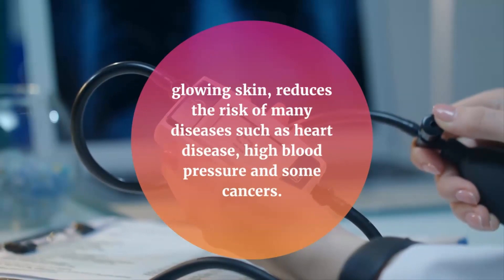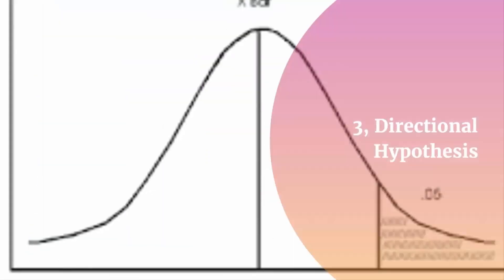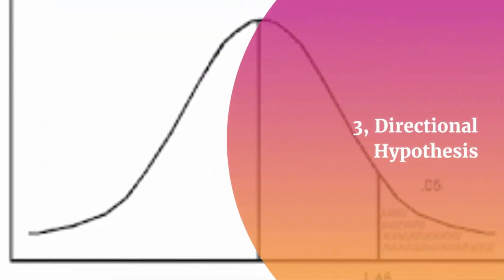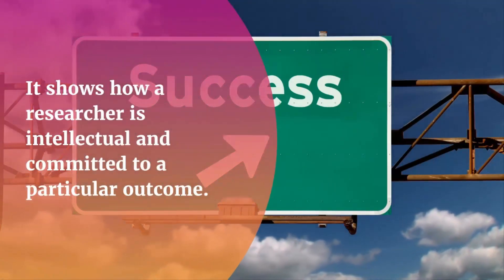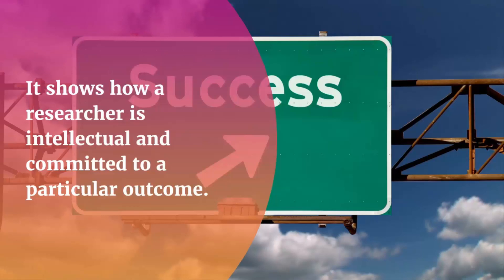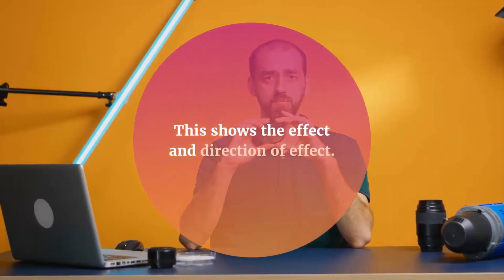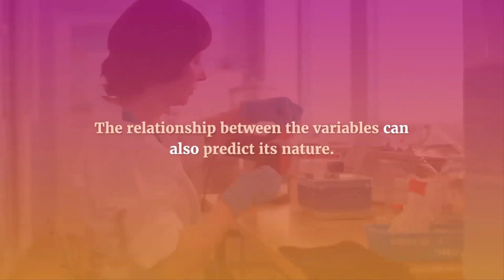3. Directional hypothesis. It shows how a researcher is intellectual and committed to a particular outcome. The relationship between the variables can also predict its nature. For example, children aged four years eating proper food over a five-year period or having higher IQ levels than children not having a proper meal. This shows the effect and direction of effect.